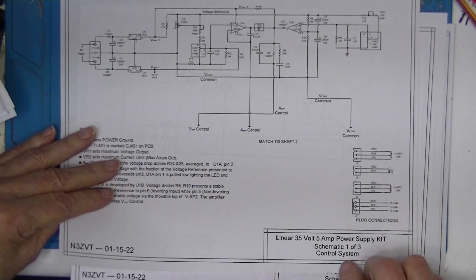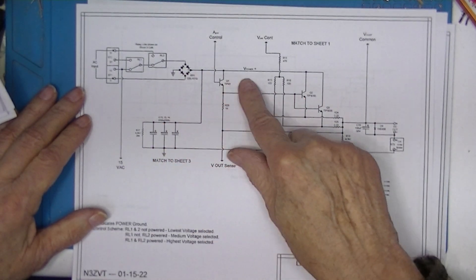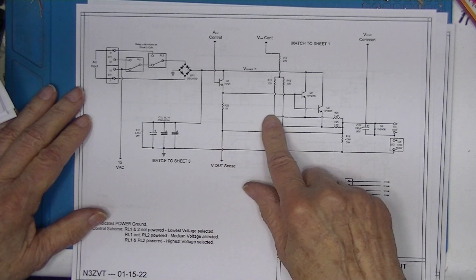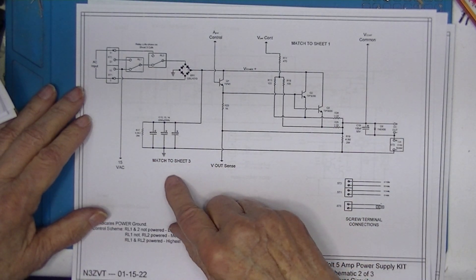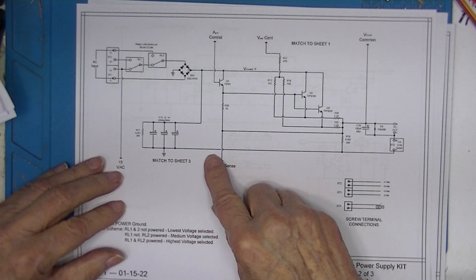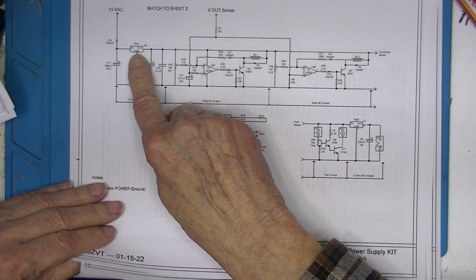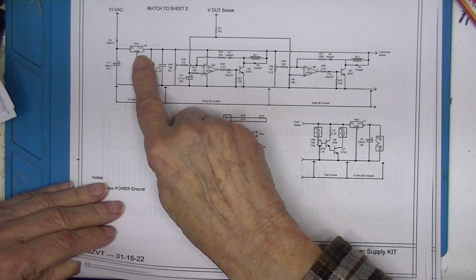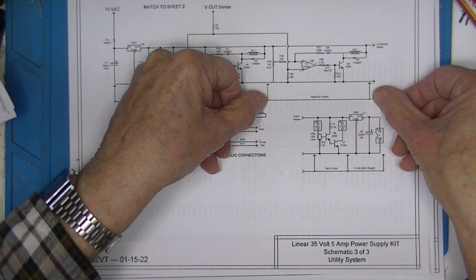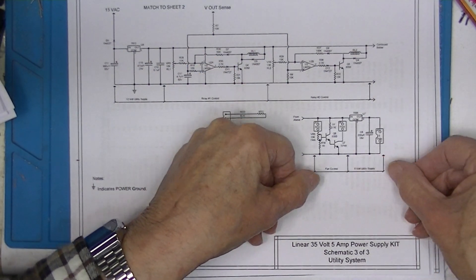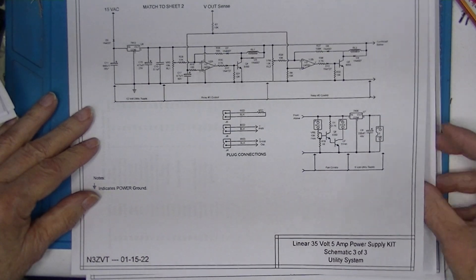I refer to this first section as a control system. The second section, which has the three wires from the first section, as the power system. Contains the pass transistors, the shunt resistors for current determination, filter capacitors. It connects to the subsystem number three with just two wires. Subsystem number three comes down here with two wires. Develops a 12 volt power supply using a 7812. So it has a power supply section, a relay control section, another relay control section, a fan control section, and a 5 volt utility supply. I've called this the utility system and it's on sheet three.